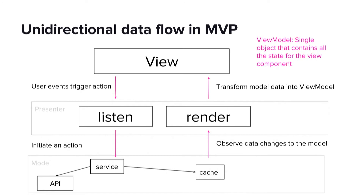Now let's look into the details of this data flow. We start in the upper left with the user input. The user input is mapped to a Redux-like action. The action specifies some kind of business logic, like whether we should talk to the network first, and eventually it updates the cache, which is the single source of truth in this application. Then the view is subscribed to this change and updates whenever the model updates. Optionally, if our view state is in a different format from our model state, we can transform our model into a view model in the presenter layer. A view model is a single object that contains all of the data necessary to represent the state for the view component, and can even include transient state like whether the screen is currently loading.